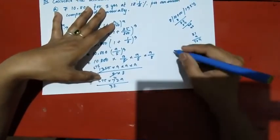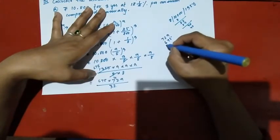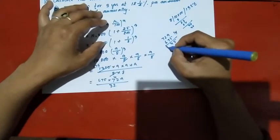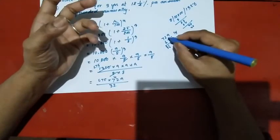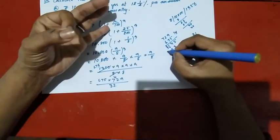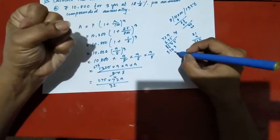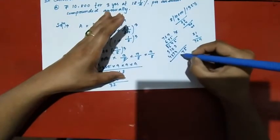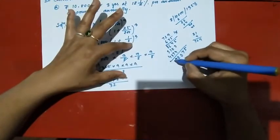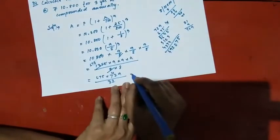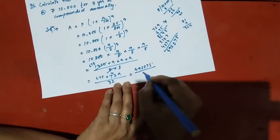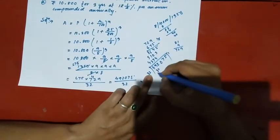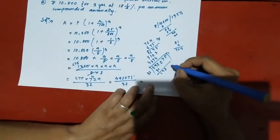Carrying out the division: 729 divided by 32. Working through the steps — 7, 29, 6, 75, 5, 45, 10, 14, 5, 35, 36 — carry 2, carry 5, carry 1 — bringing down digits. After completing the long division, we arrive at the result: 4, 9, 2, 0, 7, 5 divided by 32.